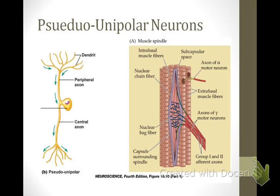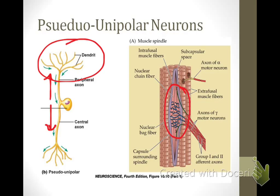Pseudounipolar neurons have a single axon that branches off to go in both the peripheral direction and the central direction. All the sensory neurons with cell bodies in the dorsal root ganglion are pseudounipolar cells. These sensory cells have specialized dendrites that can respond to a specific sensory modality. For example, the muscle stretch receptors, shown here, have dendritic processes that wrap around muscle fibers. When the muscle is stretched, the mechanical deformation of the membrane causes generation of an action potential, which travels towards the spinal cord.